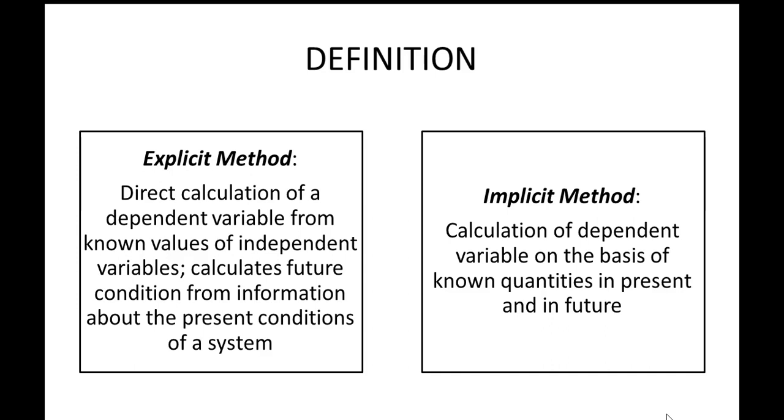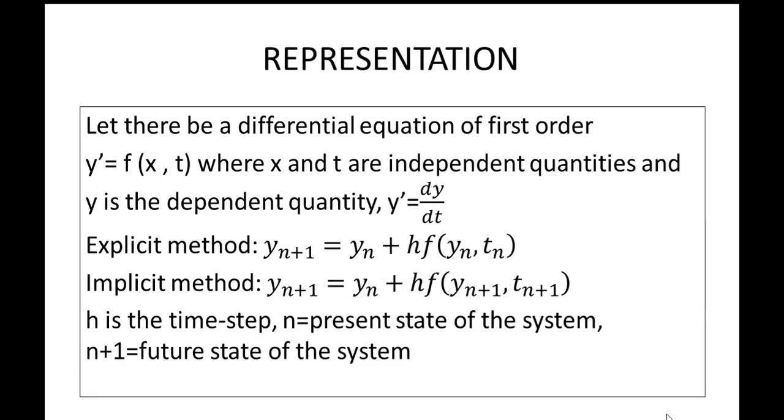Let us walk through the representation so that it becomes clearer to us. Let us assume that there be a differential equation of first order, that is y' which is nothing but dy/dt, a function of x and t where x and t are the independent quantities. Now if we are applying explicit method, the next value for y will be as y_n+1 = y_n, that is in the present time n is for present time, n+1 is for the future time.